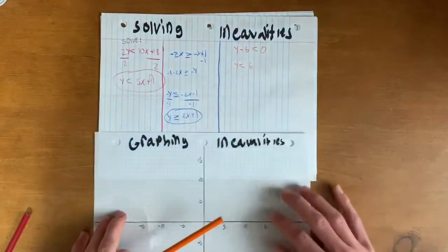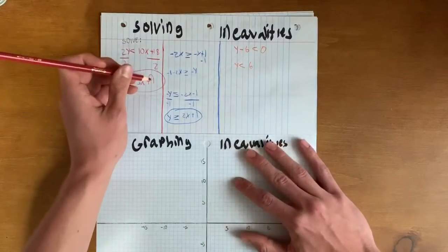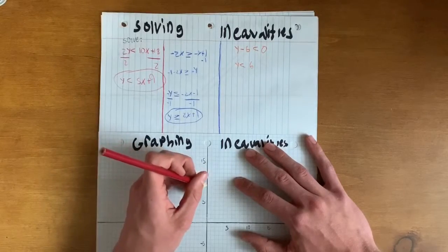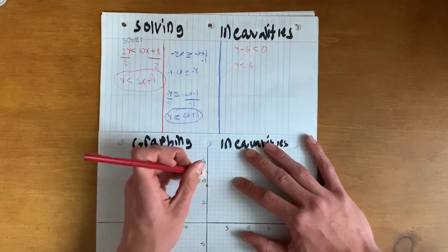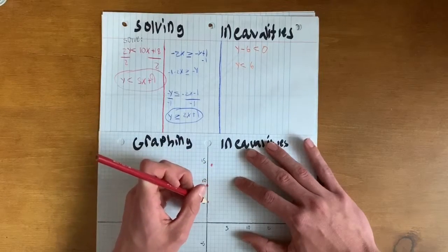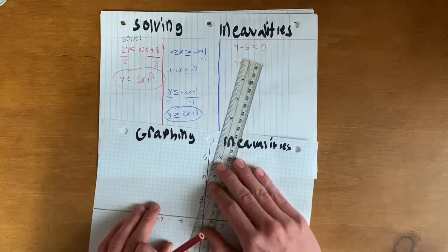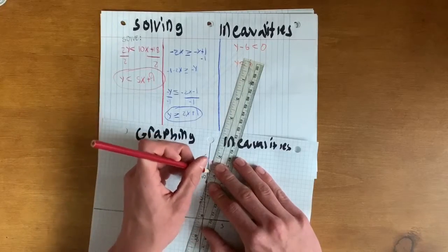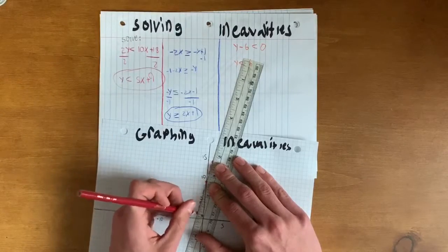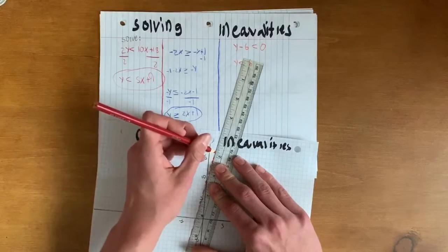Now we're ready to graph the inequalities. For y < 5x + 9, start at 9, go up 5 and over 1, down 5 and over 1. When we plot this line, we use a dashed line because it is not equal to — the solution can be anything less than that line but cannot be equal to the line.